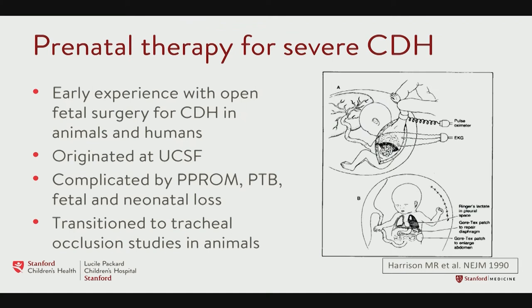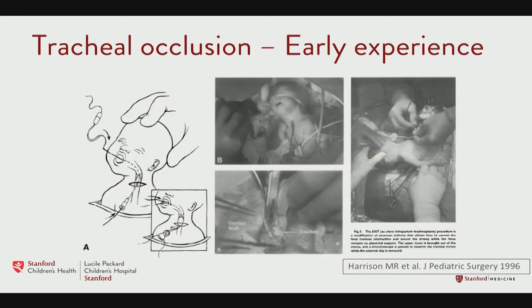This was the original fetal therapy approach, coming out of UCSF by pediatric surgeons who said maybe we can perform a primary repair for CDH. A laparotomy was made to expose the uterus, then a hysterotomy — a uterine incision — was made, the baby was exposed, the diaphragm was isolated and repaired primarily. As you can imagine, especially almost 30 years ago, women did poorly and babies did very poorly — very high risk of premature rupture of membranes, very high risk of prematurity, and many babies did not survive the initial surgery. So Dr. Harrison and his colleagues then went back to the drawing board.